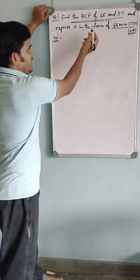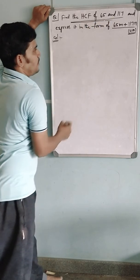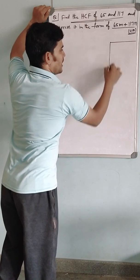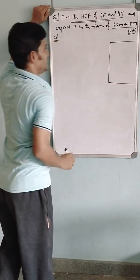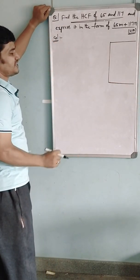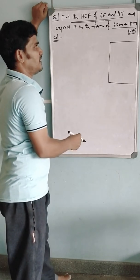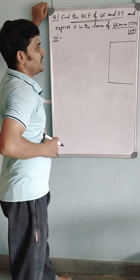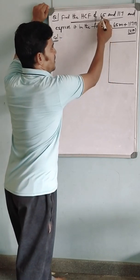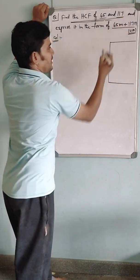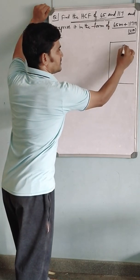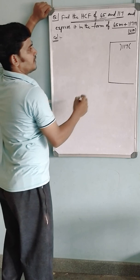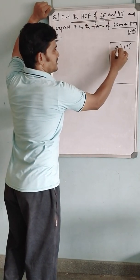Let us go for the first part of the solution — that is to find HCF of 65 and 117. First of all, I will find the HCF by successive division, as you have learned in earlier classes. Among 65 and 117, 117 is greater, so take it as the dividend and 65 as the divisor.